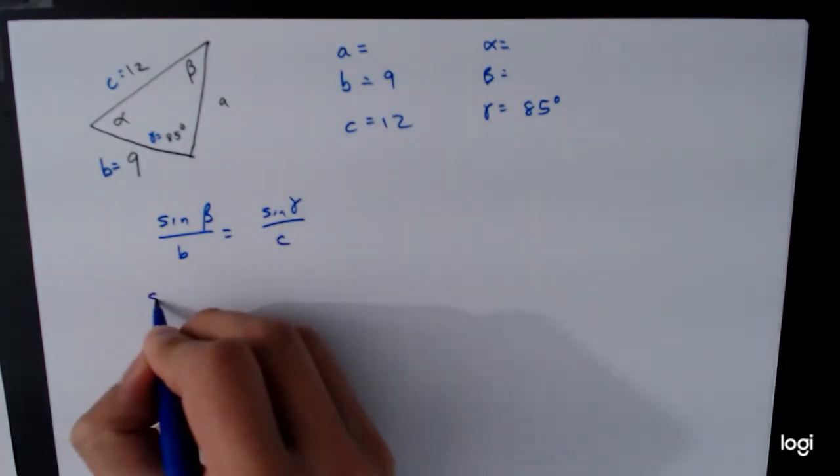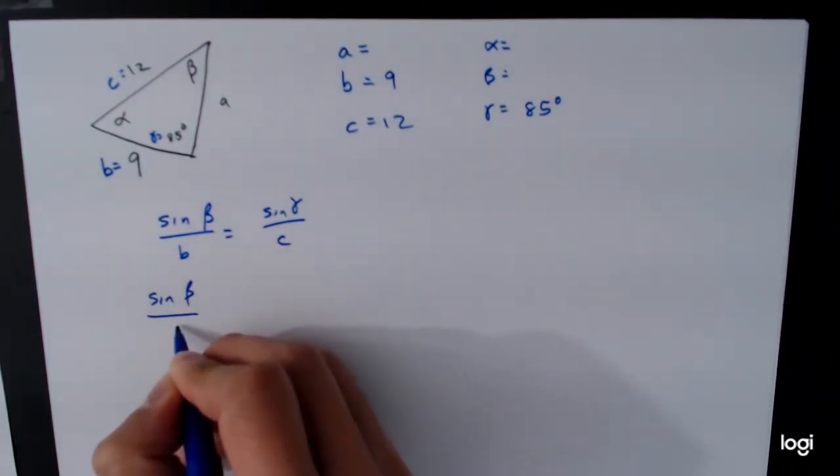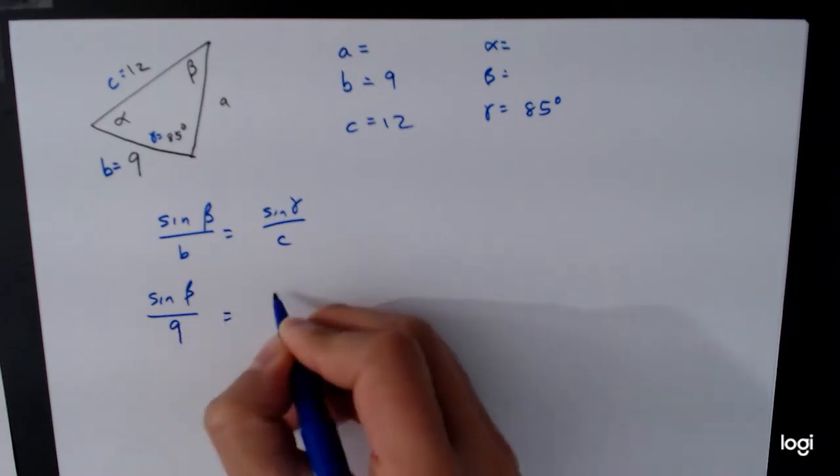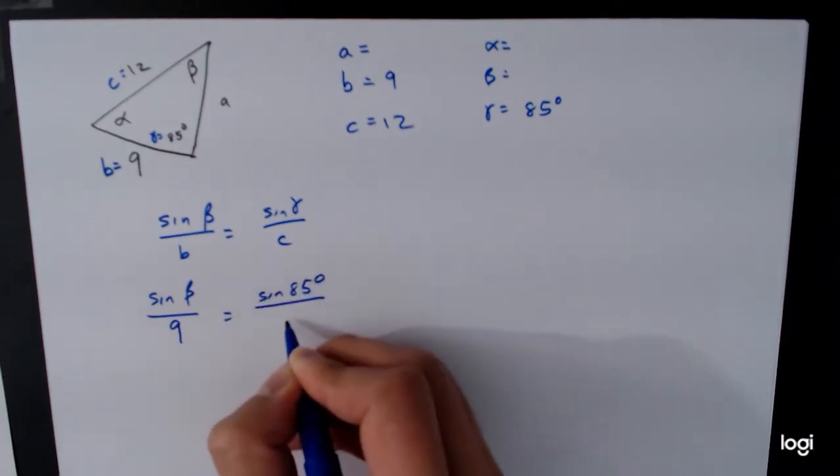Plug in some values, sine of beta is equal to, sorry, beta over 9 is equal to sine of 85 degrees over 12.